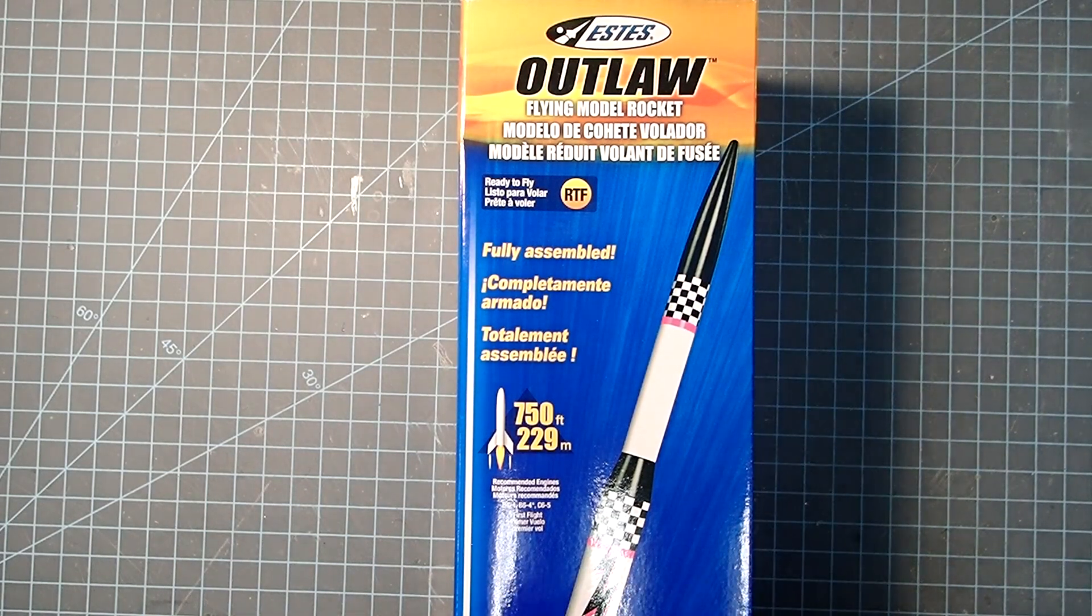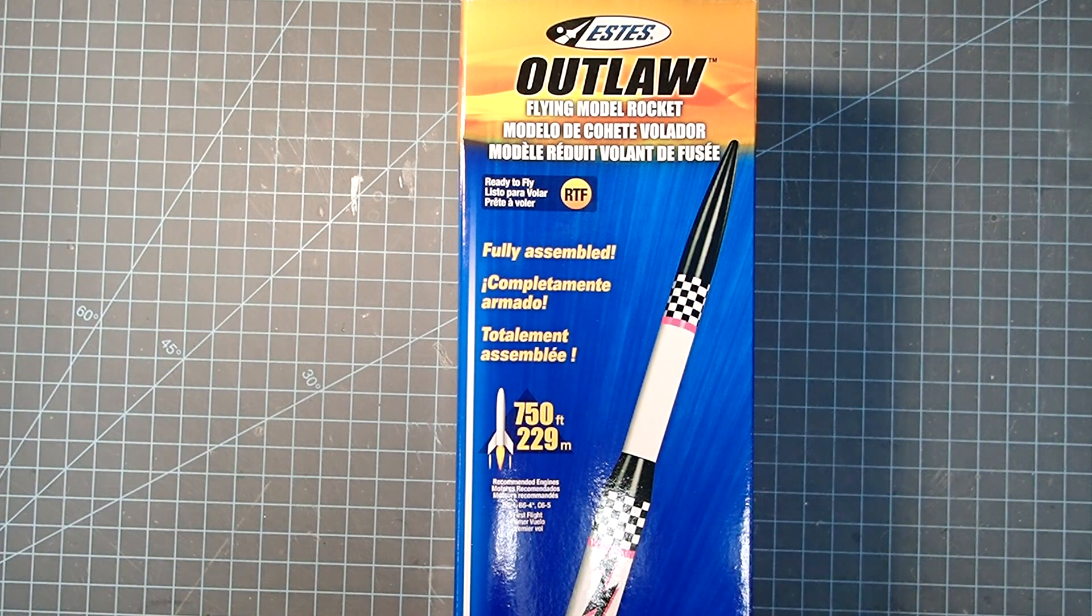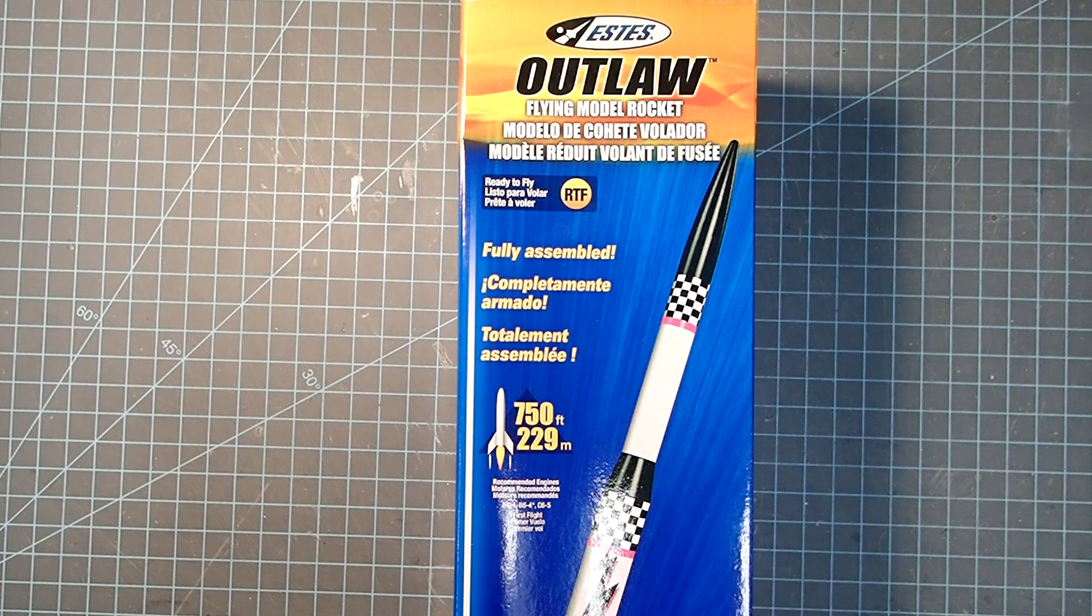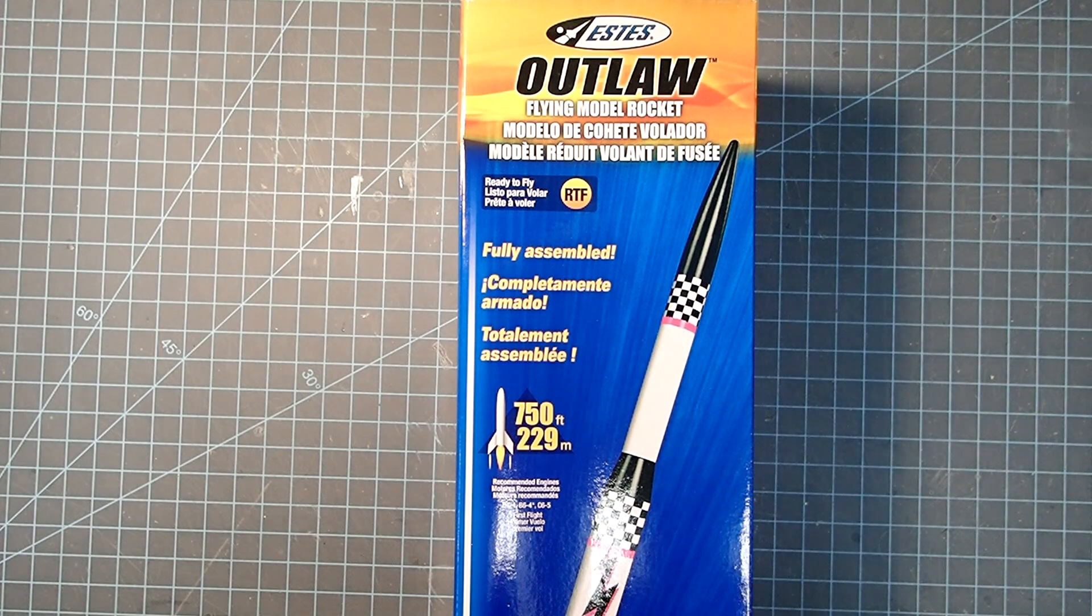Hello, everyone. I'm Dave Thomas, and today I am assembling the Estes Outlaw model rocket. Now, this is advertised as ready to fly. It's actually almost ready to fly. We have to do a little bit of work on the parachute and putting it together, but this whole thing will take less than 15 minutes.